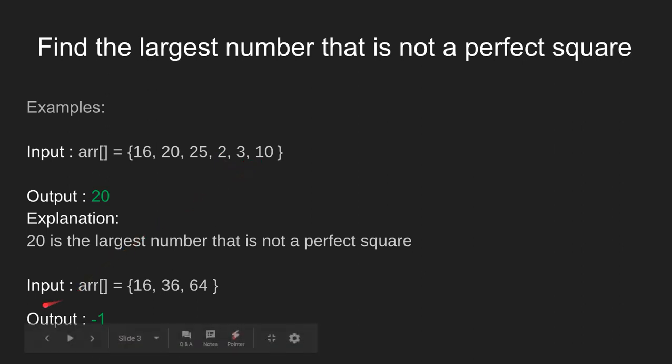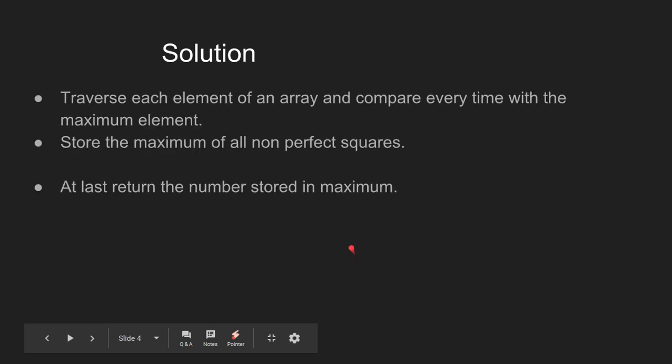In the second example, we have taken input as arr = {16, 36, 64}. The output should be minus one, as there is no number which is not a perfect square. Now let us know the solution of the problem.